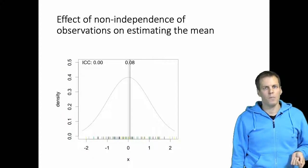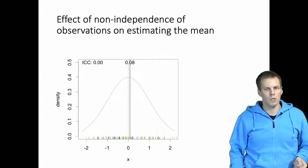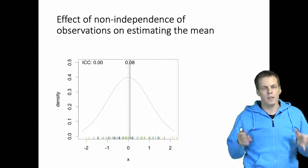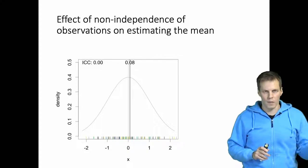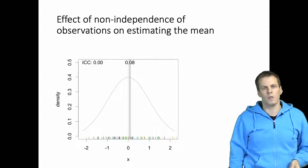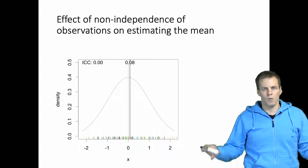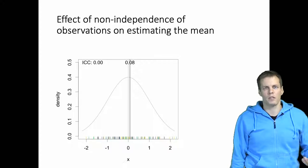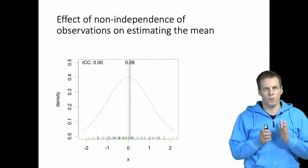Let's take a simple example where we are interested in estimating the mean of the population. Our sample is 100 observations, and these 100 observations come from five clusters. Let's say we are observing five companies over 20 years, or we are measuring reaction times from five people each measured 20 times, and we want to know what the population mean is.